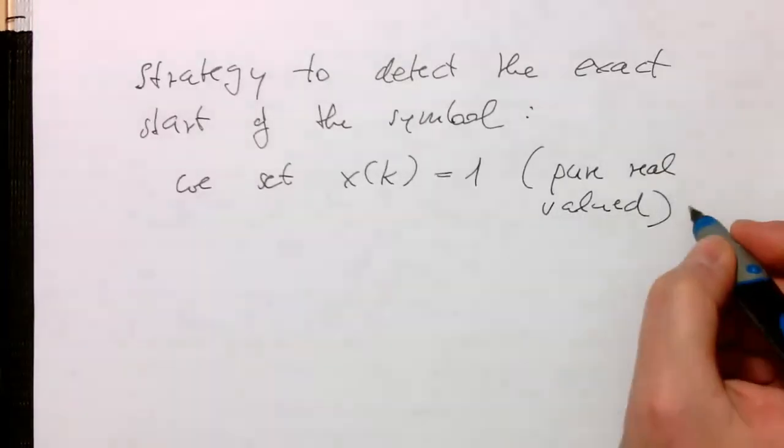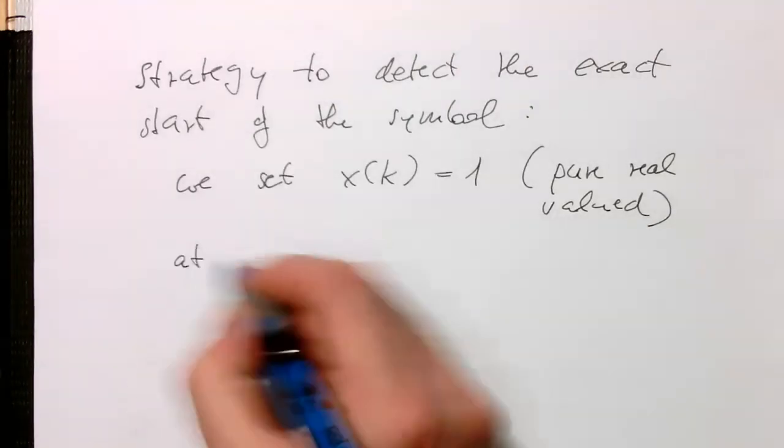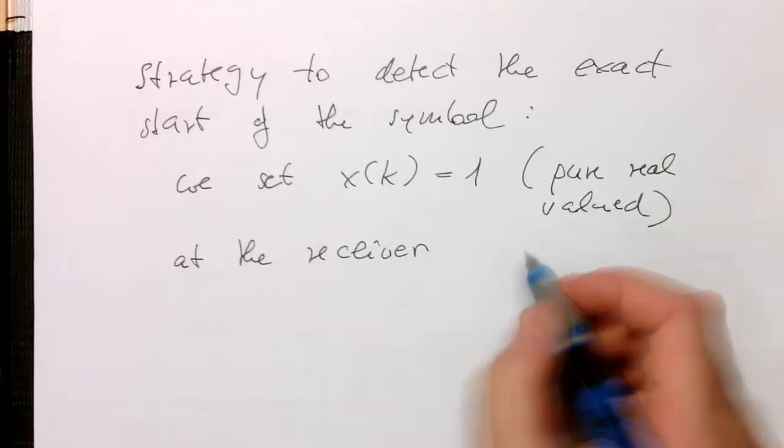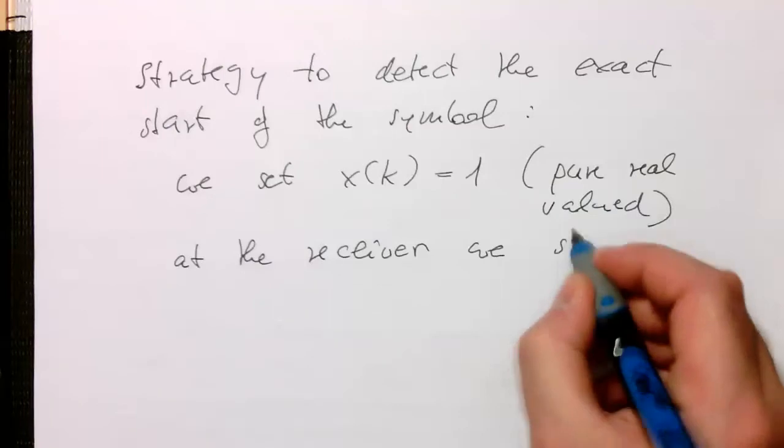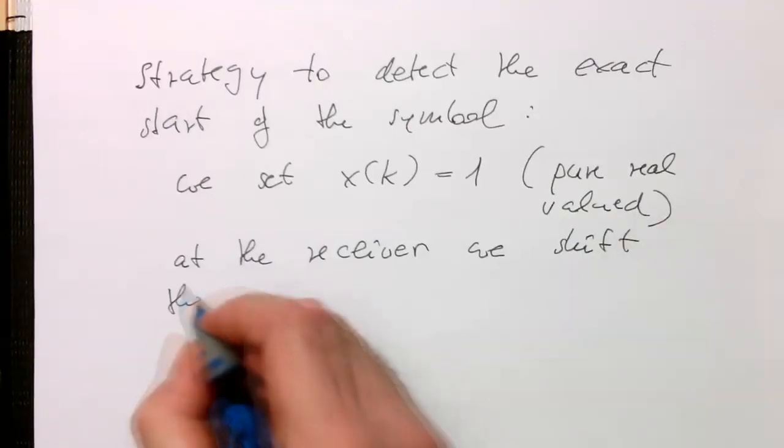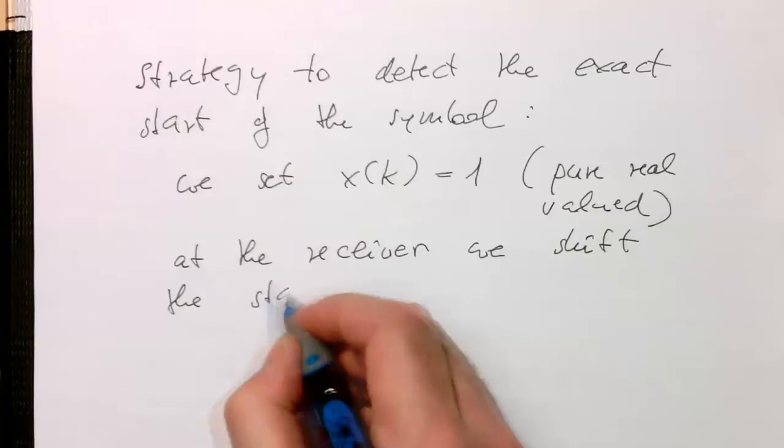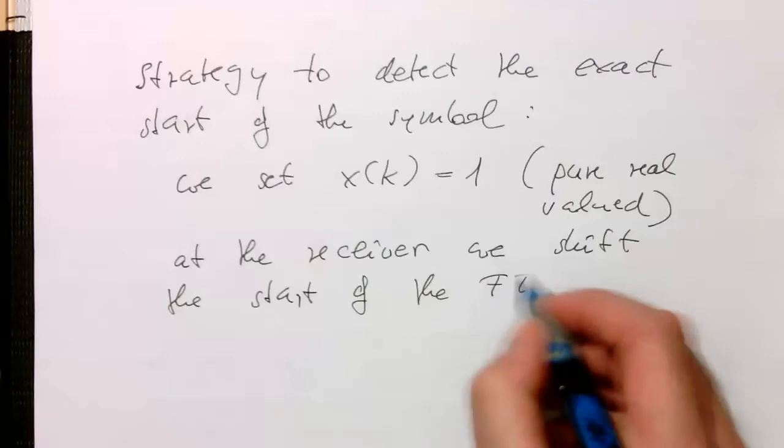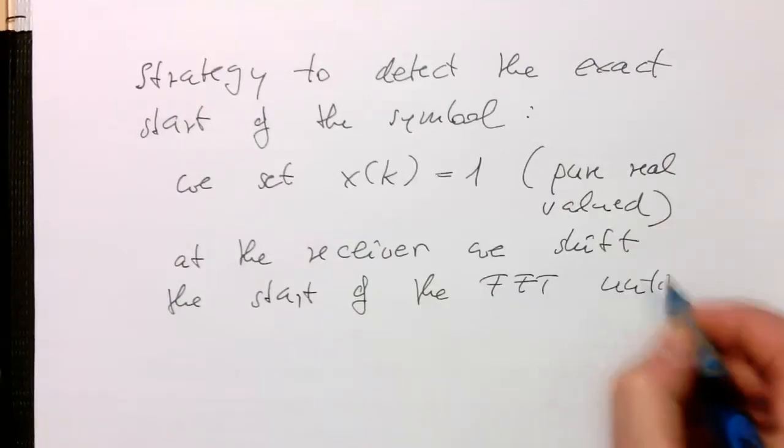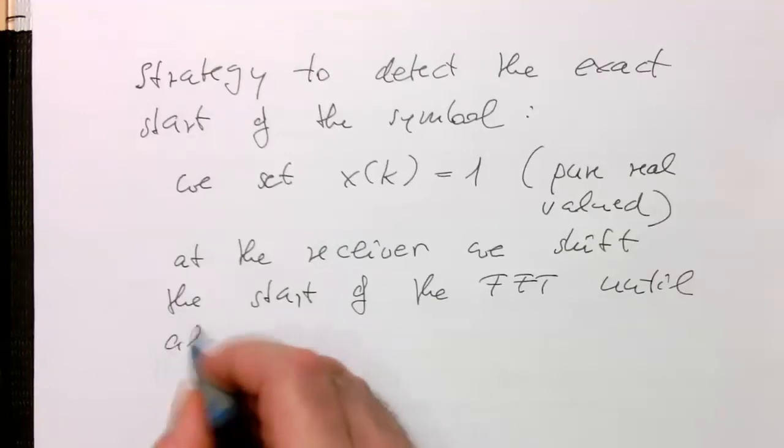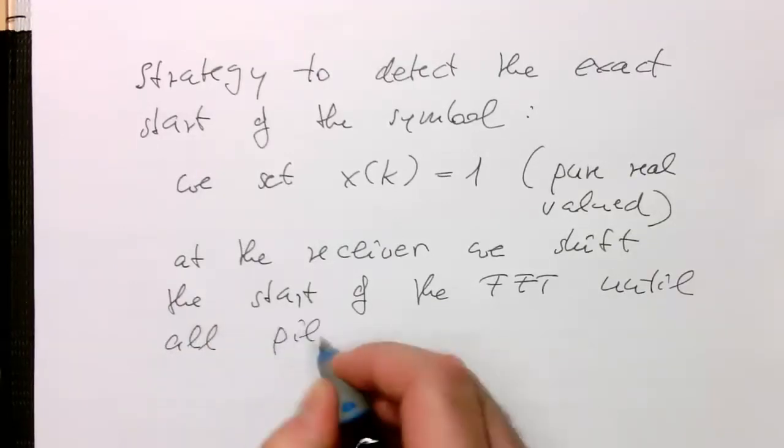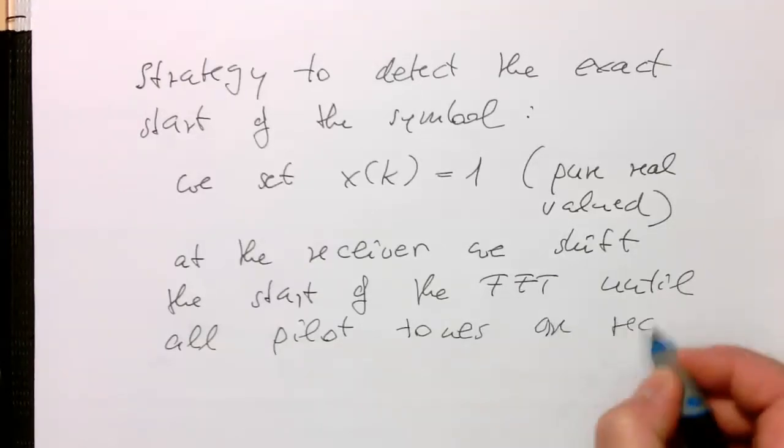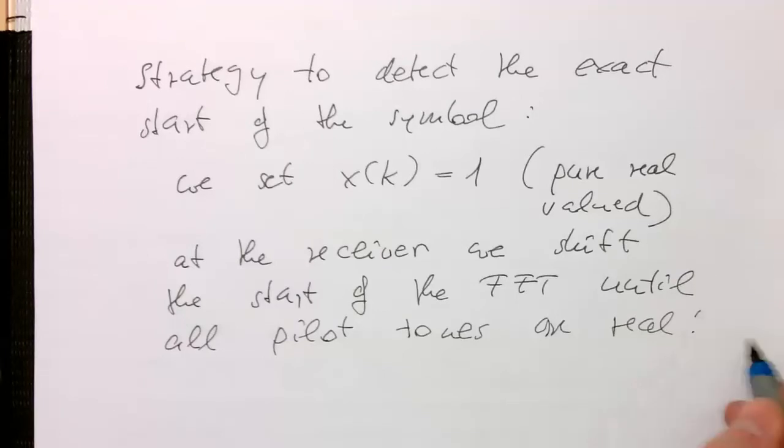At the receiver, we shift the start of the FFT until all pilot tones are real. Simple as that.